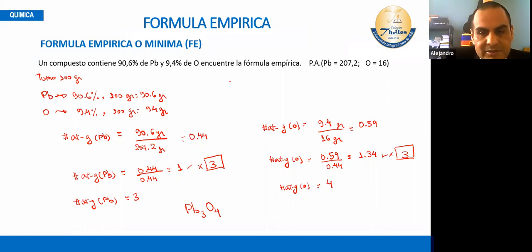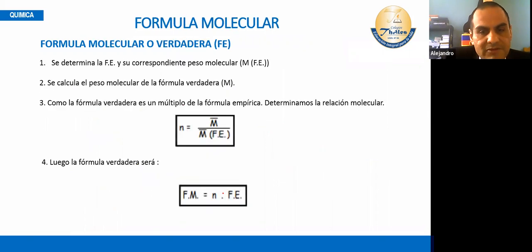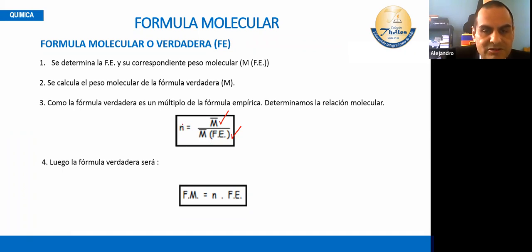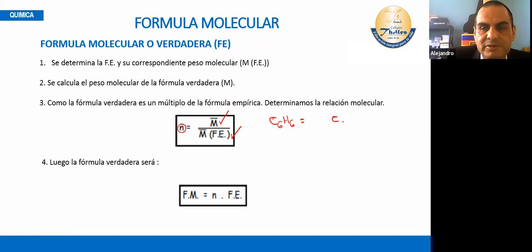Si ya determinamos la fórmula empírica, lo que viene es la fórmula real. Para determinar la fórmula real, necesitas el peso molecular real y el peso molecular de la fórmula empírica. La fórmula molecular es N veces la fórmula empírica. Por ejemplo, el benceno tiene fórmula empírica CH, que multiplicado por una constante 6 se transforma en la fórmula molecular.